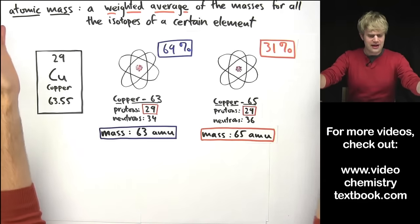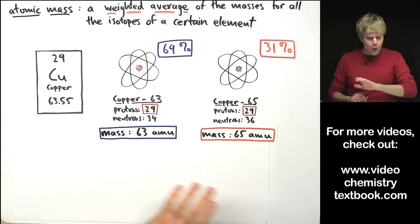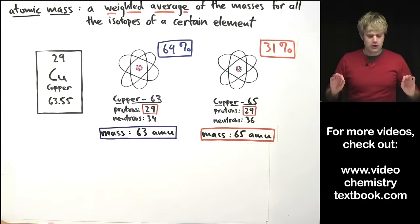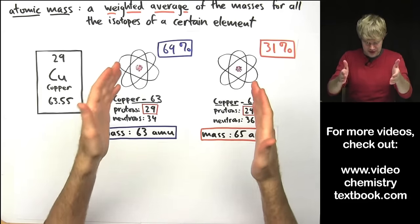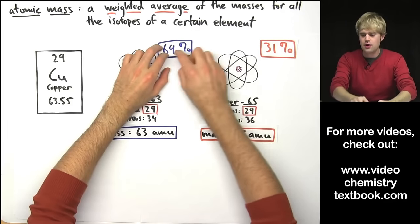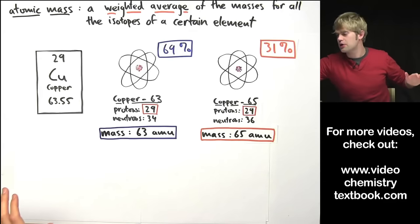So to find the atomic mass, we need to do a weighted average calculation that takes into account the mass of each of these isotopes but also their percent abundance. And here's how we're going to do it.